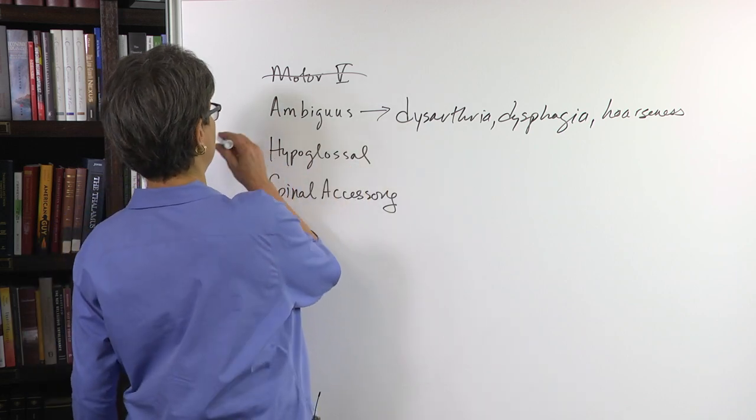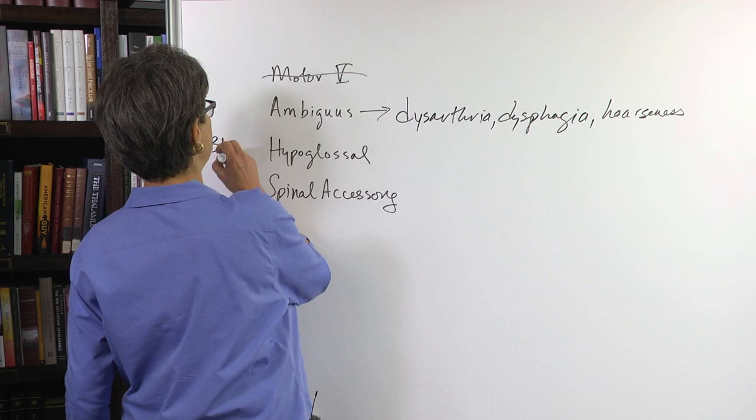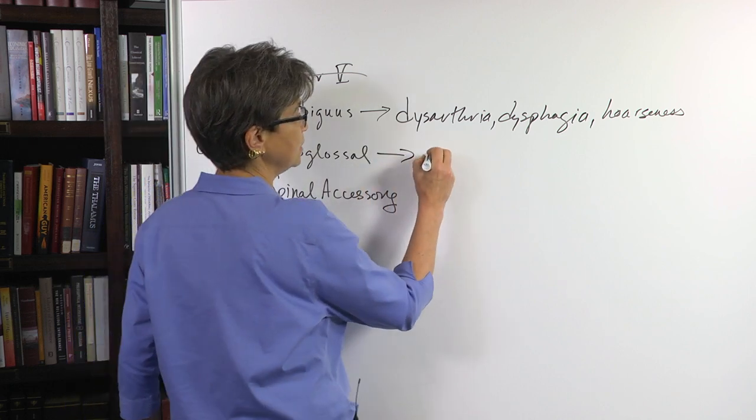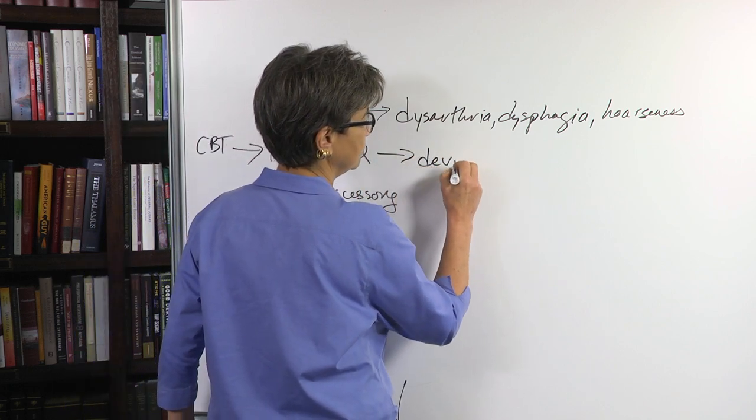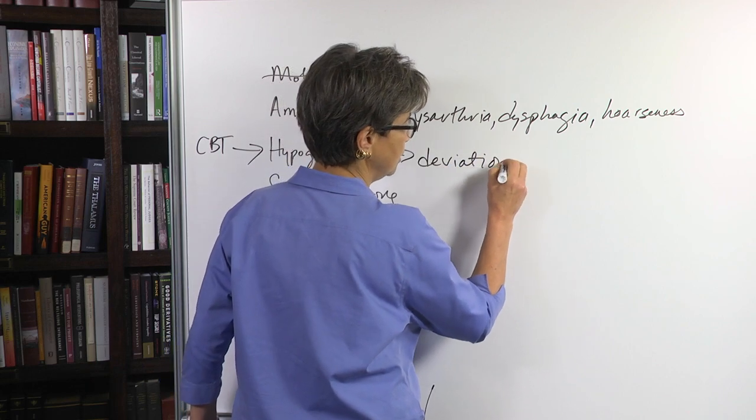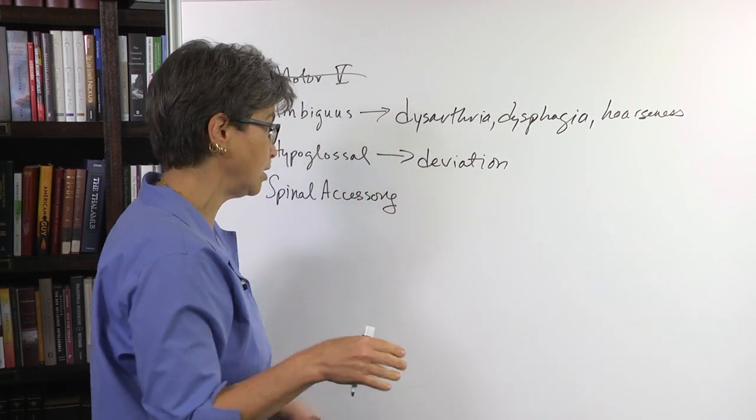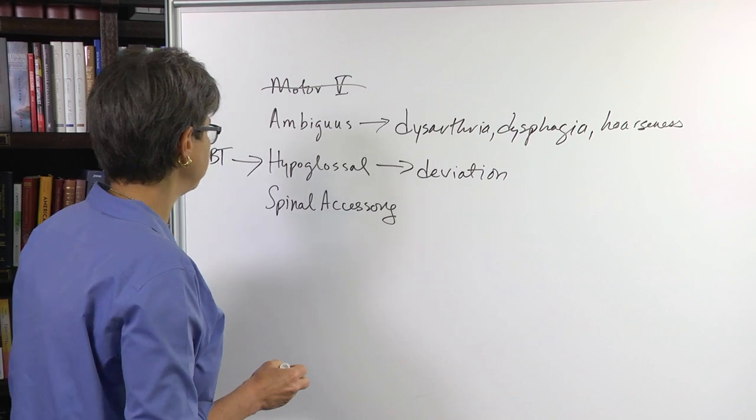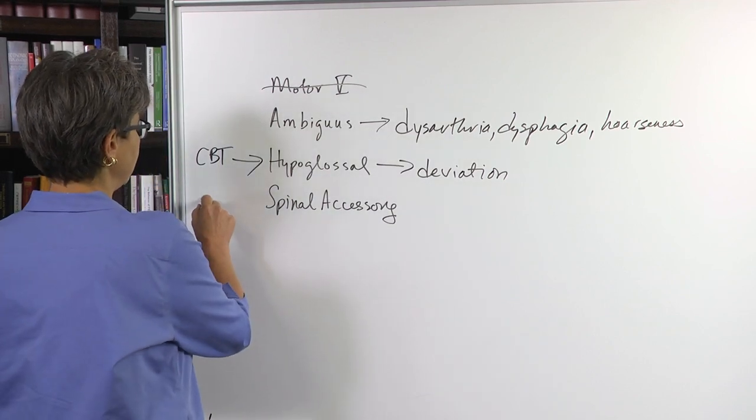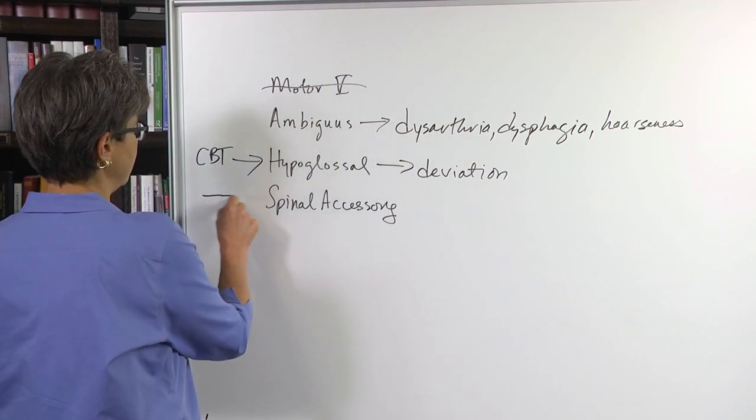As a result of a lesion of the corticobulbar tract to the hypoglossal nucleus, there will be a deviation of the tongue when you stick out the tongue.